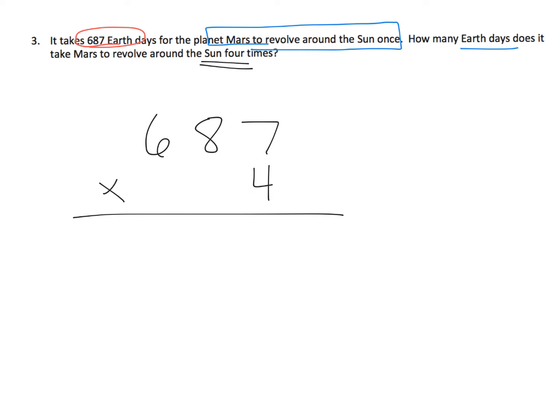And we're going to do that using the standard algorithm. So you've got 4 times 7 ones is 28. Then you've got 4 times 8 tens is 32 tens, plus 2 more is 34 tens. So that's going to be 3 and 4. So 3 in the hundreds column, 4 in the tens column. And you've got 4 times 6 hundreds is 24 hundreds, plus the 3 extra hundreds, so that's 27 hundreds. So our answer is 2,748. And what is that? It's 2,748 days.